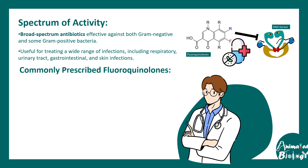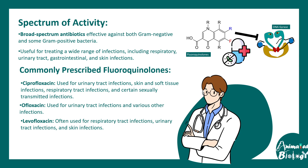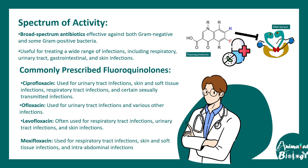Here are some prescribed forms of fluoroquinolones. Ciprofloxacin is widely used for urinary tract infections, skin infections, and GI infections. Ofloxacin is mainly used for urinary tract and GI infections. There are others like levofloxacin, moxifloxacin, and more.